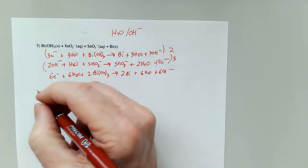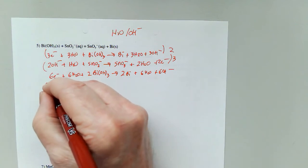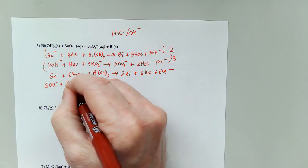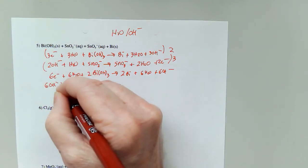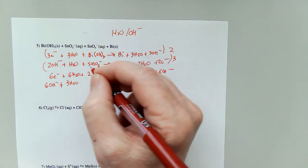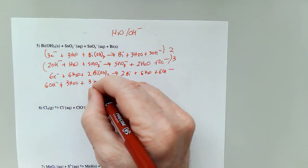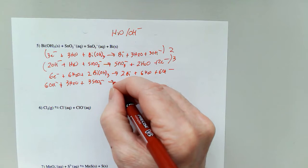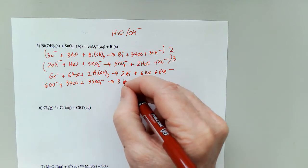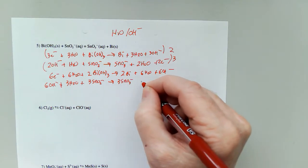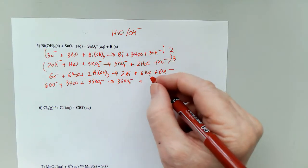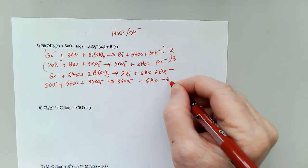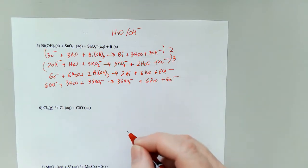For the next one, two times three is going to be six hydroxides, three waters, three SnO₂²⁻ to give me three SnO₃²⁻, two times three is six waters, and six electrons.